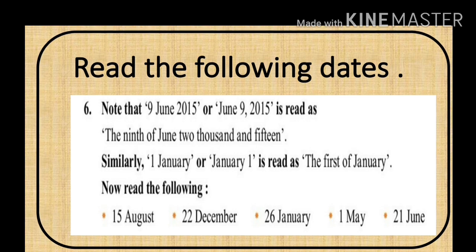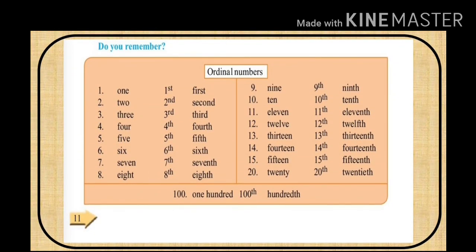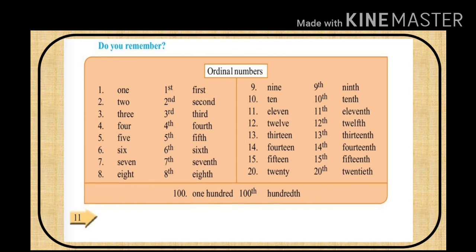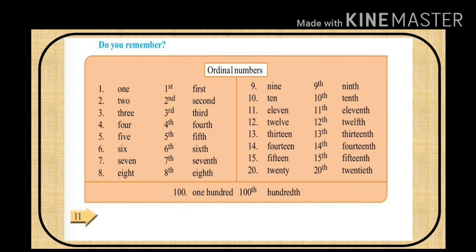Question 4. Read the dates given and write them in your notebook. Do you remember? Ordinal numbers — there are two types of numbers: Cardinal numbers and Ordinal numbers. Here you are given Ordinal numbers, meaning क्रम वाचक संख्या.